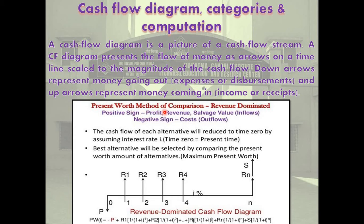In the present worth method of comparisons of projects with probabilistic cash flow components: first, the expected value of each probabilistic component is computed. Then the net present worth of all components is computed at a given discount rate. It is assumed that the cash flow diagram of each project is revenue dominated — revenues assigned positive signs and costs assigned negative signs. If the present worth is positive, the project is feasible; otherwise it is not. Finally, the project with the highest present worth is selected as the best project, as illustrated with different examples.